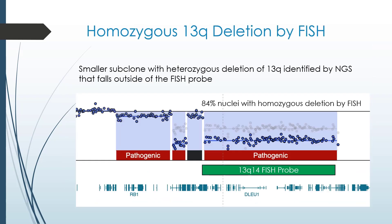We often see patients with both heterozygous and homozygous deletions of 13q by FISH. In one patient where we identified only a homozygous deletion by FISH in 84% of nuclei, the NGS platform output shows a small region with a heterozygous deletion in a smaller subclone relative to the larger population with 84% deletion detected by FISH. Importantly, where the FISH probe sits it does not cover the RB1 locus, which is where the heterozygous deletion was identified, so the NGS platform helped us identify a heterozygous subclone in this patient.